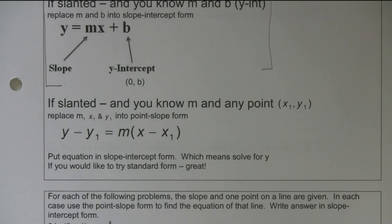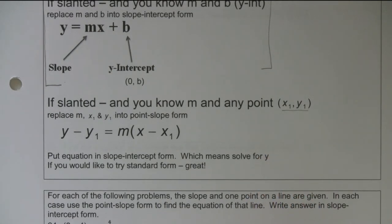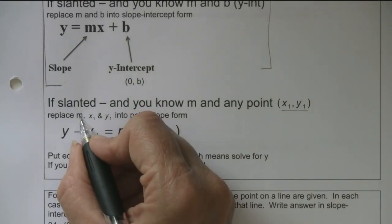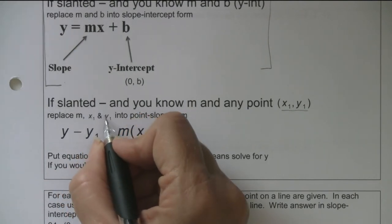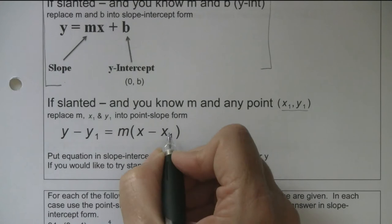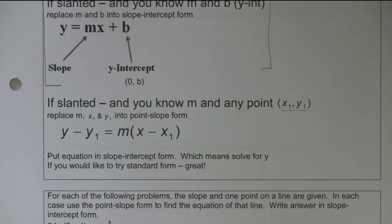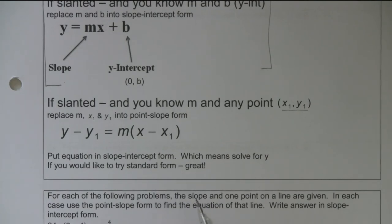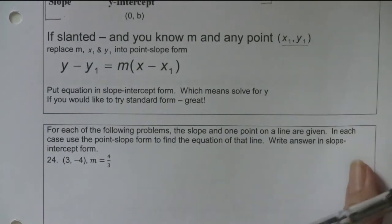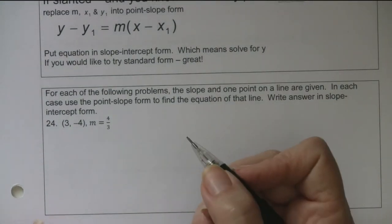We've done slanted lines where you know the y-intercept - plug two numbers in and you're done. Horizontal and vertical are even simpler - plug one number in. But if it's slanted and you know the slope but don't know the y-intercept, just any old point on the line, it's a little more work. You substitute into y minus y1 equals m times (x minus x1) - the slope m, and the point x1 and y1. Then you solve for y.